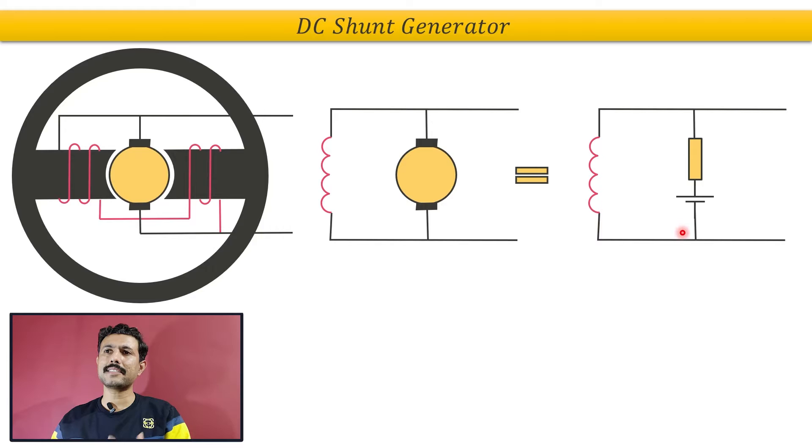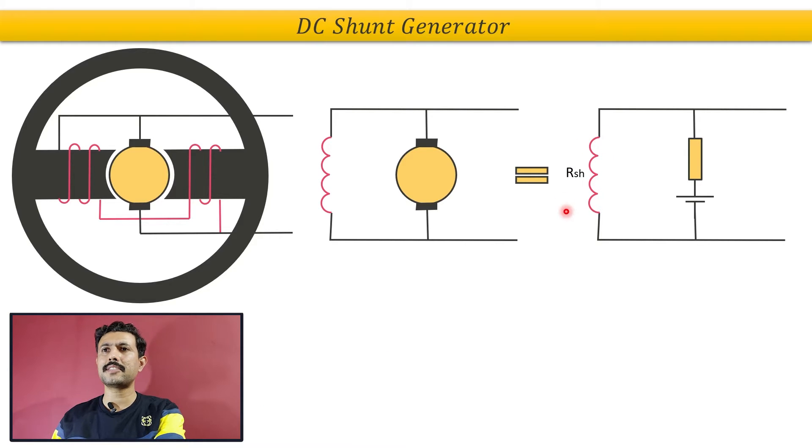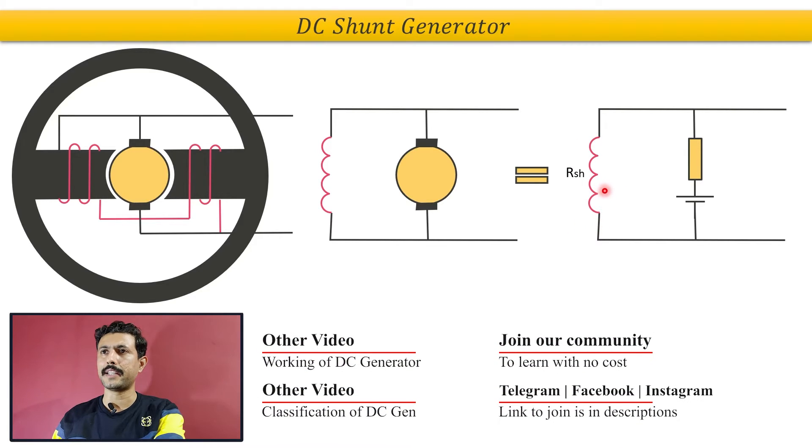Now let's get the electrical parameters of this circuit. This is RSH, which is basically the resistance of this shunt field winding.